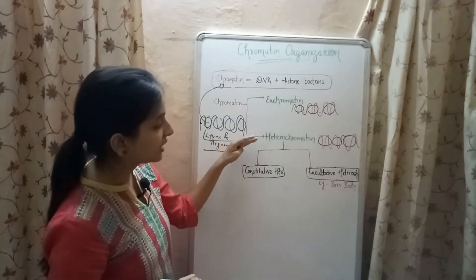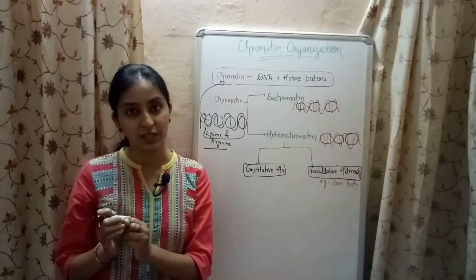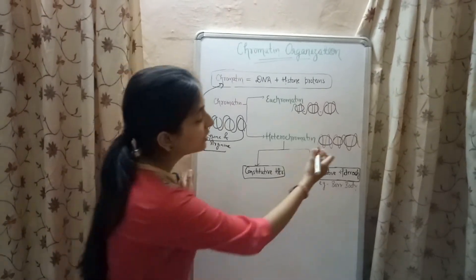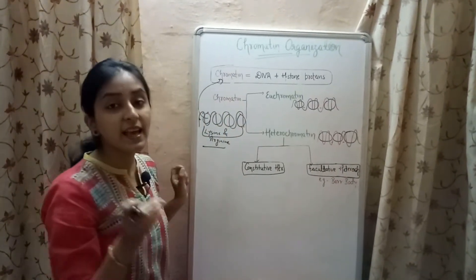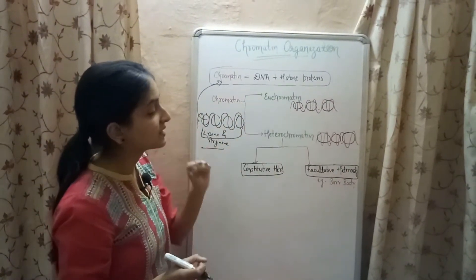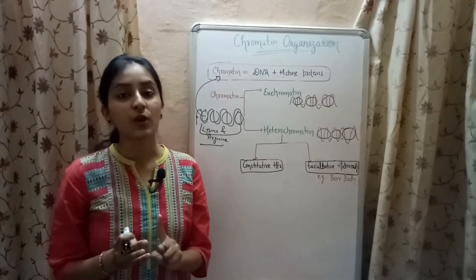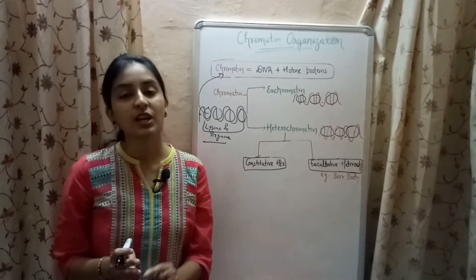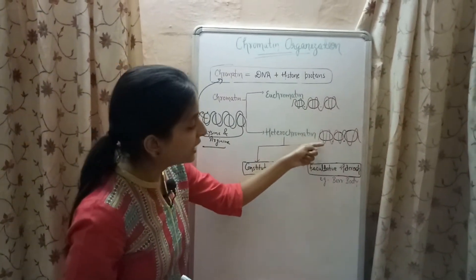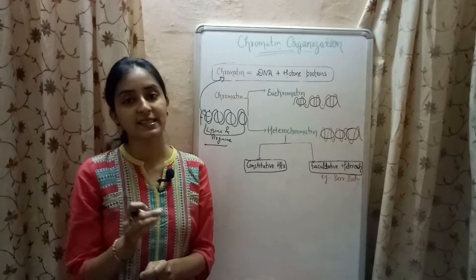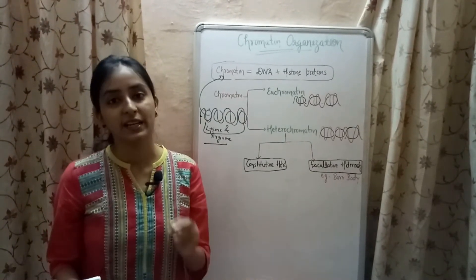The second type of chromatin is heterochromatin, which is the condensed form of chromatin. In heterochromatin, the space between the histone proteins is less compared to euchromatin. Because of the dense packaging, heterochromatin is either transcriptionally inactive or transcriptionally less active, meaning the DNA inside cannot be easily transcribed into RNA, or does not transcribe into RNA at all.